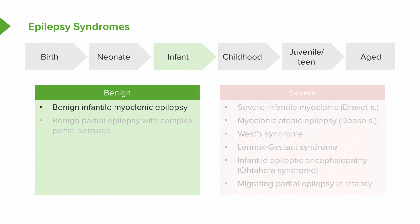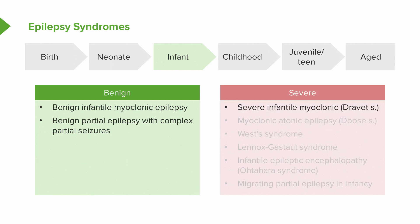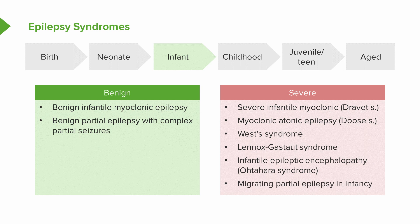In the infantile age range, the benign epileptic conditions include benign infantile myoclonic epilepsy and benign partial epilepsy with complex partial seizures. Those associated with abnormal neurologic exams tend to be Dravet syndrome, Doose syndrome, West syndrome, Lennox-Gastaut syndrome, Ohtahara, and migrating partial epilepsy in infancy.